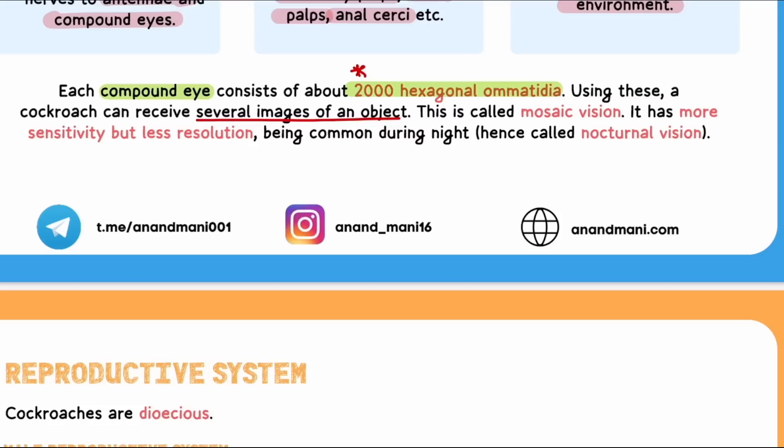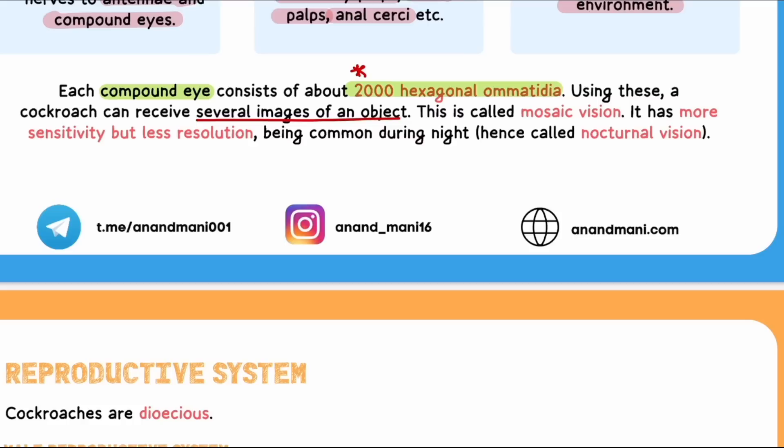Due to ommatidia, the cockroach can form several images of one object — this is called mosaic vision. The sensitivity of this vision is high but resolution is low, which is why cockroaches can see well at night and have nocturnal vision.